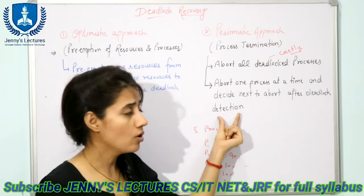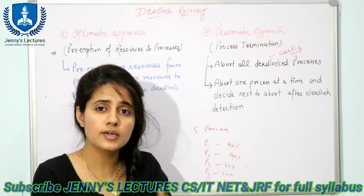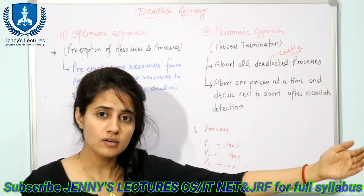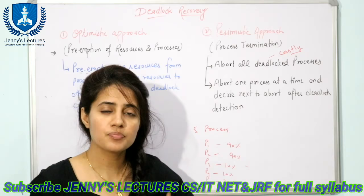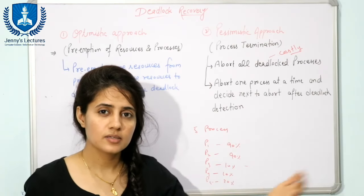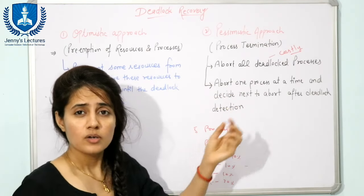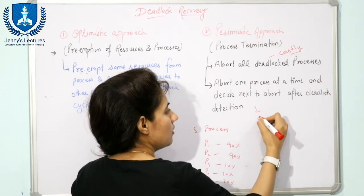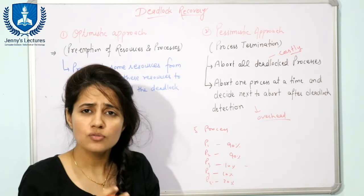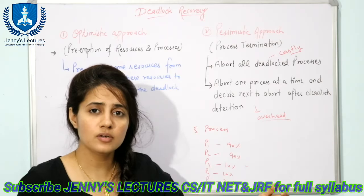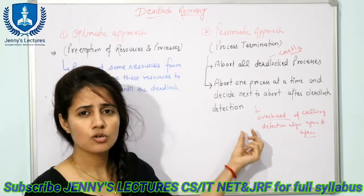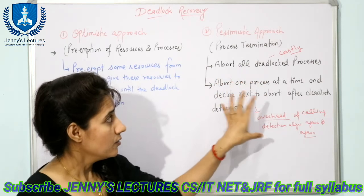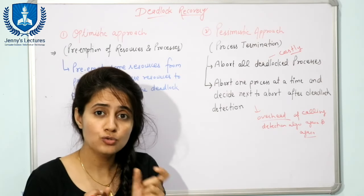In the one-at-a-time method: abort one process, then invoke the deadlock detection algorithm. If a cycle is still detected, choose the next process to abort, invoke the algorithm again, and keep repeating until the deadlock cycle is eliminated. The drawback here is the overhead of invoking the deadlock detection algorithm again and again after each process termination.